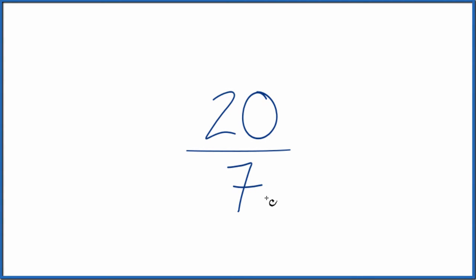Let's write the fraction twenty-sevenths, that's 20 over 7, as a mixed number, also called an improper fraction.